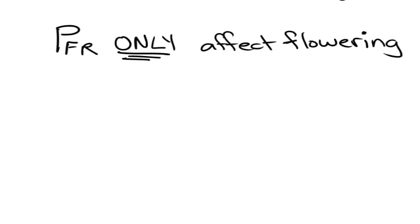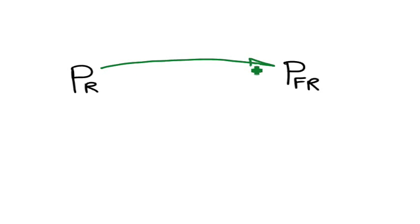Phytochrome far red only affects flowering. We can actually draw a slightly more detailed diagram than before. We start off with our phytochrome red. We have our phytochrome far red. During the day we get a very fast conversion. As soon as we have daylight or white or red light,